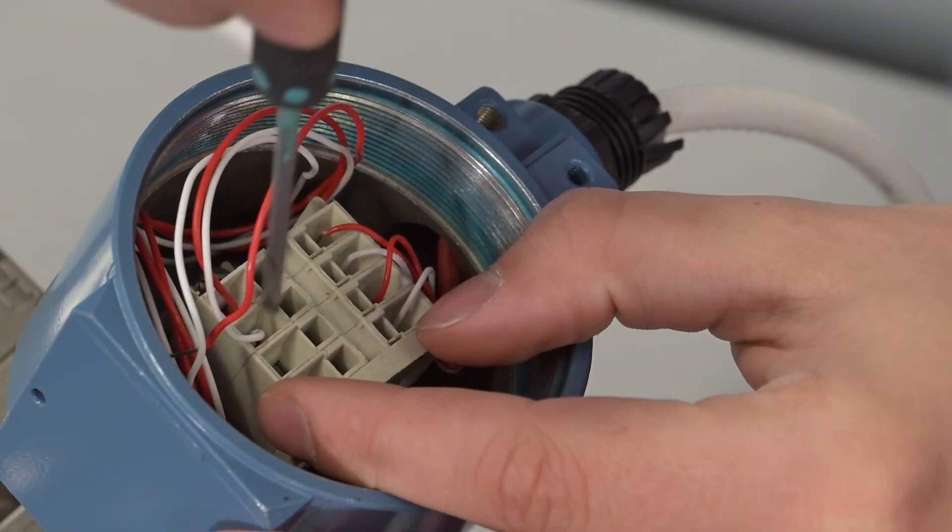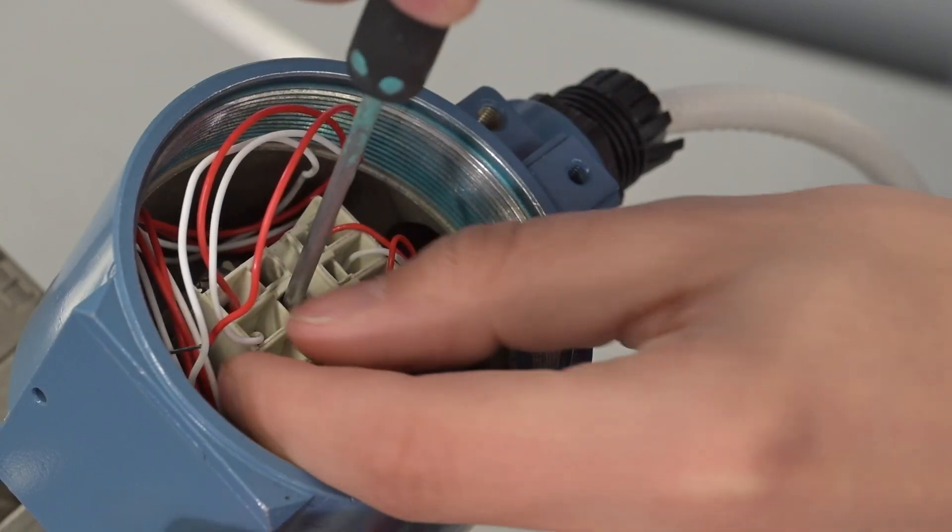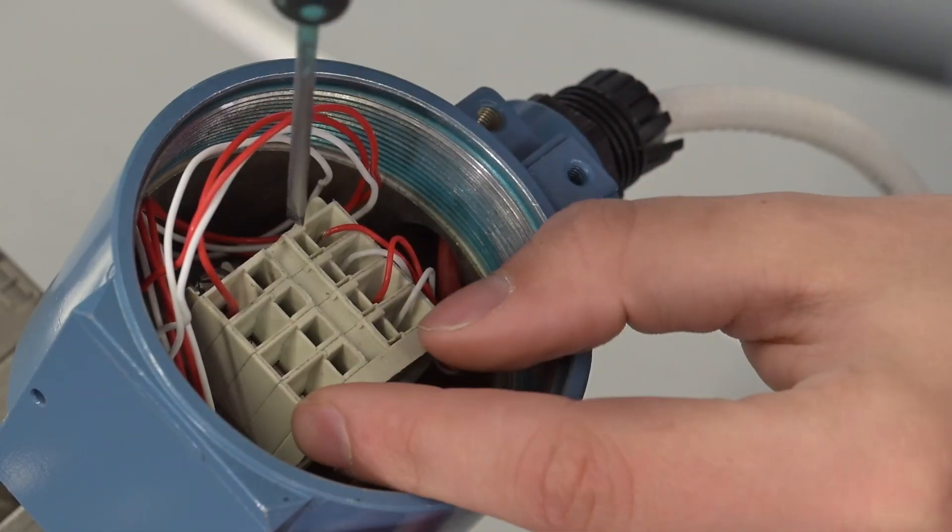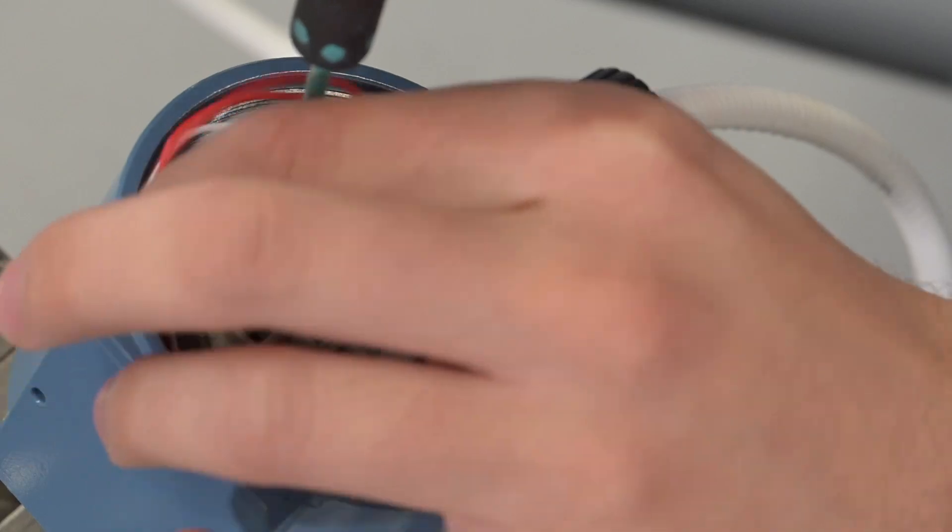To remove the wires, insert a small screwdriver in the terminal slot and push the clip forward towards the wire and remove the wire from the slot.